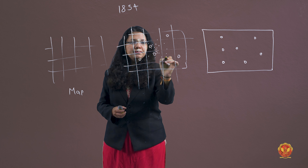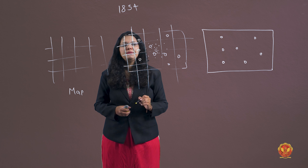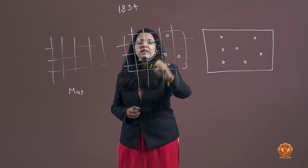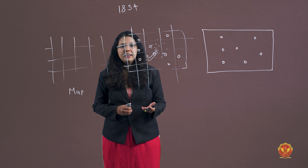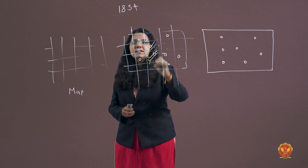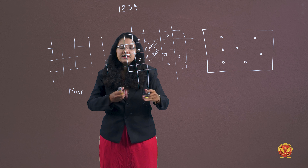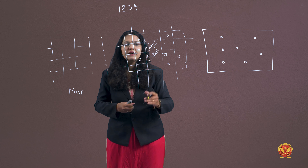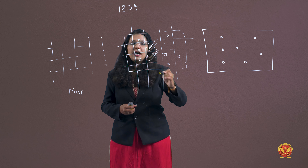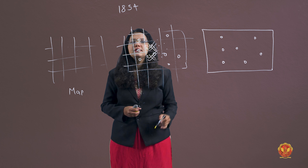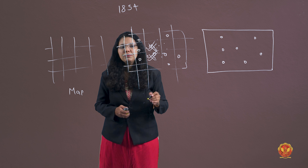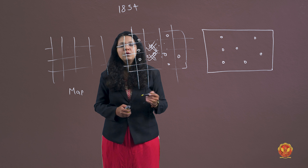After making the map to scale, they came to understand which deaths were associated with which particular pump and what type of water that pump was supplying. They concluded that two specific pumps were supplying polluted water. So the government said to stop using those two pumps and consume water from any other pump, and the epidemic came to an end.